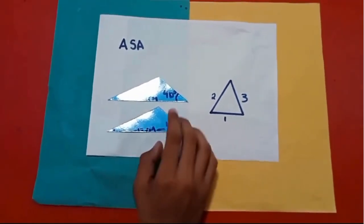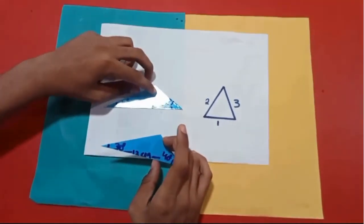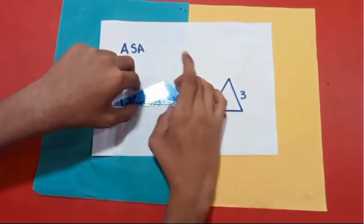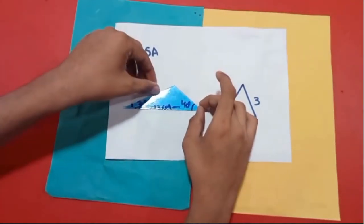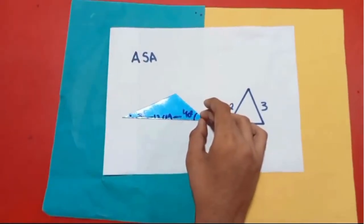Now, let's try overlapping these two triangles to check whether the congruency is there in these triangles or not. Yes, these two triangles are congruent.